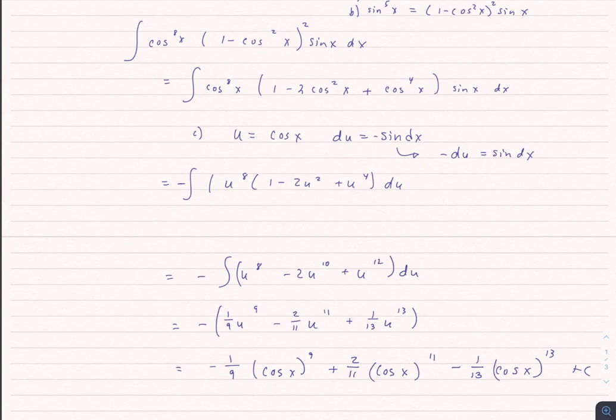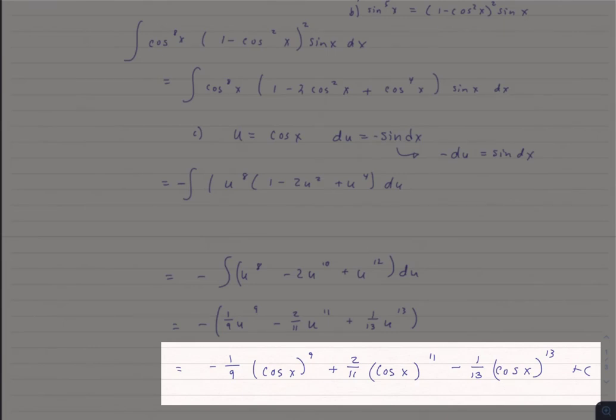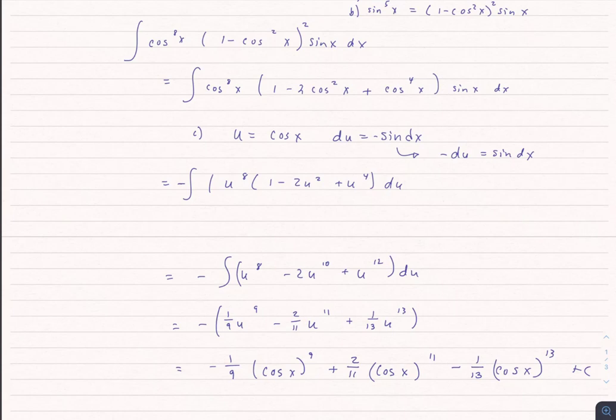When we go ahead and distribute that negative sign and go back to our u substitution, that u is equal to cosine x, we get this as a final answer. That's case one. Case two would be very similar. Case three is case one or case two.